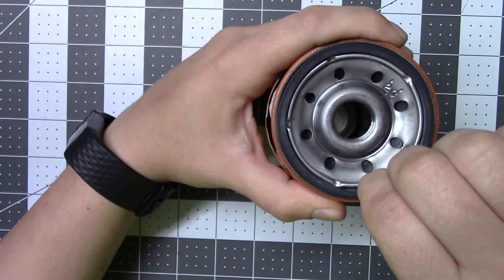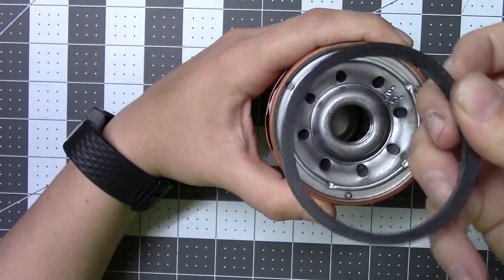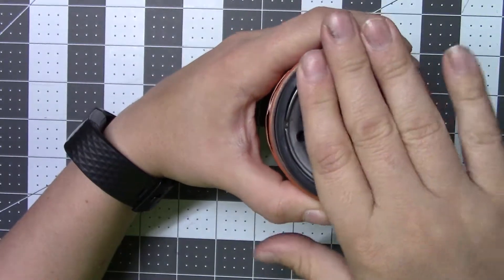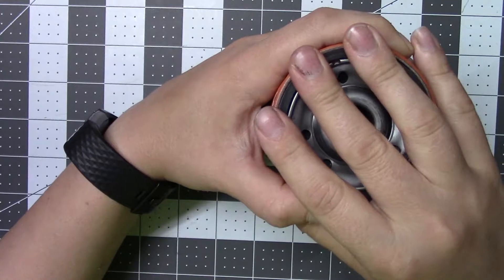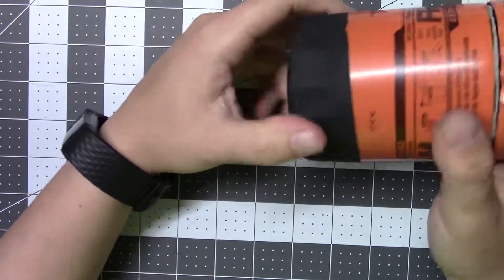And then you got the classic big ol' ring to seal against the block. Not all that much inside of an oil filter. Smash that. And then turn it over there, goes off.